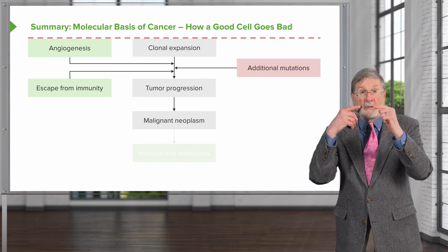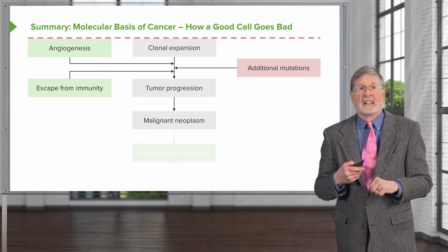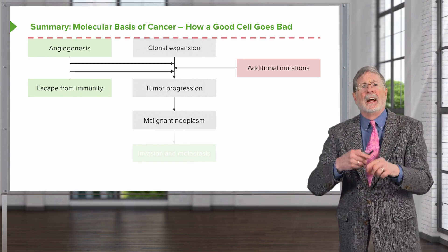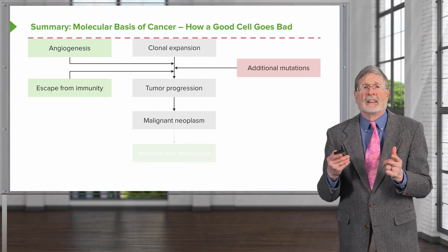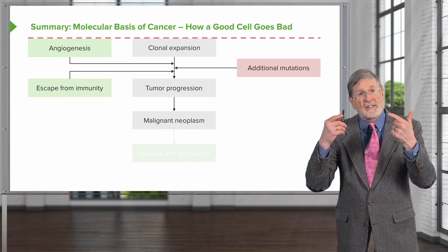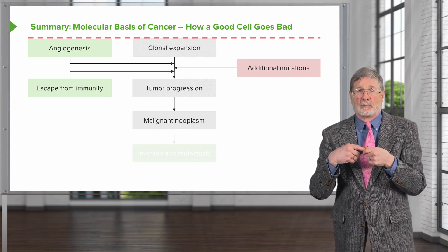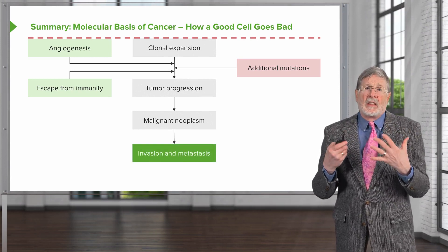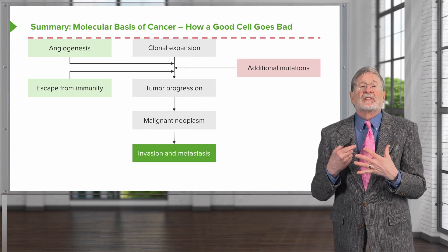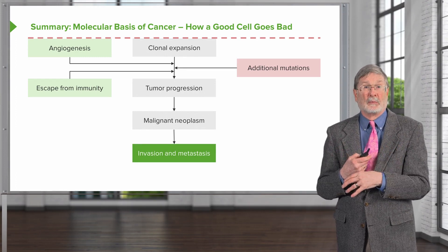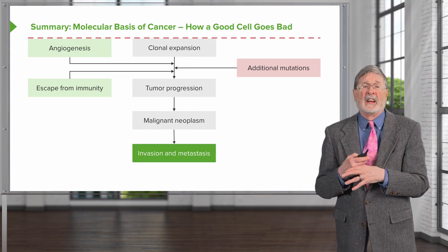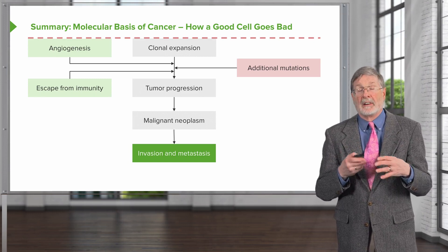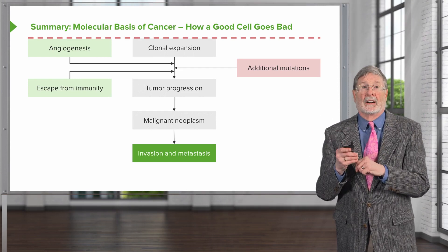Hopefully you can see it's a multi-step process. It's not a single bolt of lightning that hits a cell and turns it malignant — far from it. It requires many, many steps to get there. And then the malignant neoplasm can exert its malignant potential by invading and by metastasizing — breaking off, going into the bloodstream or lymphatics and spreading elsewhere within the body.